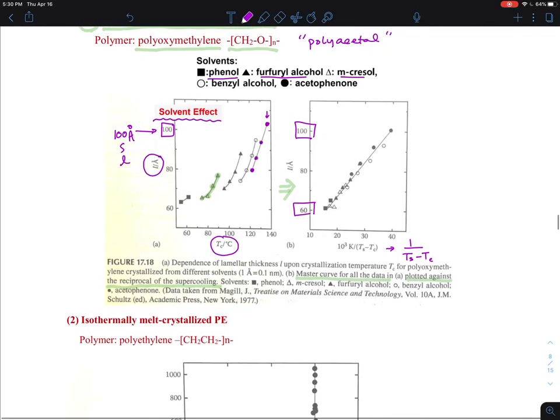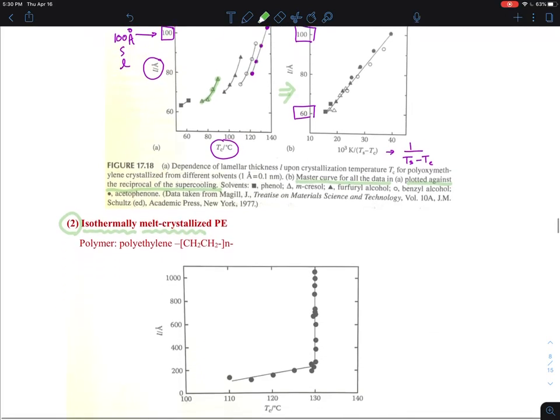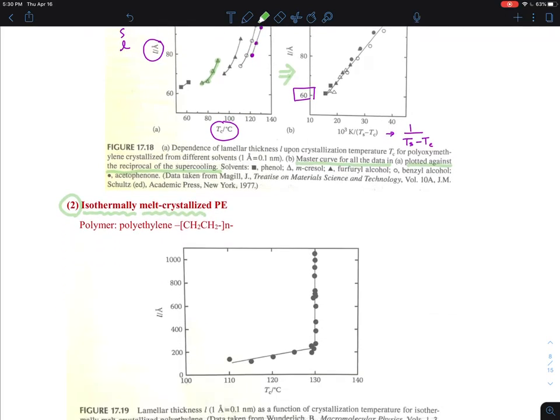The second example that is more related to the real system is isothermally crystallized from the melt state. So you have polyethylene. You can crystallize. And the melting temperature of polyethylene ranges from this temperature, 100 to 120. So you can melt the polyethylene, let's say 150 and so on.